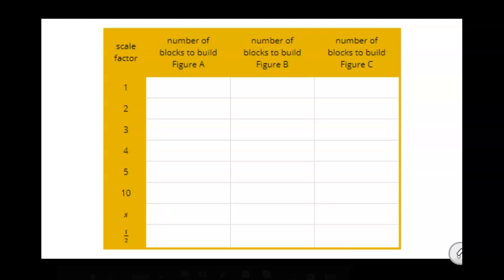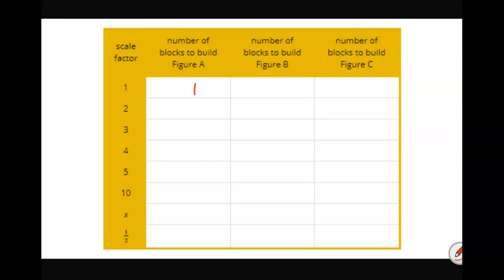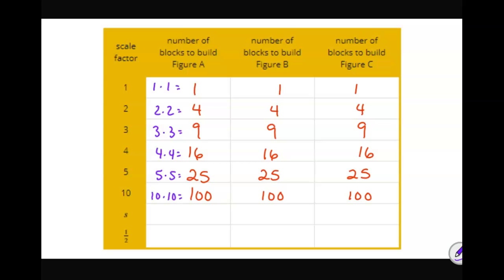So I'm going to go ahead and fill out this chart and we'll talk about some conclusions. You probably noticed that you just multiply the scale factor by itself to get that area relationship each time. So we're going to take S times S to get S squared.